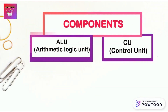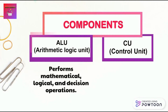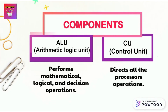In the CPU, there are two primary components. Firstly, the ALU — arithmetic logic unit — and secondly, the CU — control unit. The arithmetic logic unit performs mathematical, logical and decision operations, while the control unit directs all the processor's operations. The control unit extracts instructions from memory, decodes and executes them, acts as an intermediary that decodes instructions sent to the processor, tells other units such as the ALU what to do by providing control signals, and then sends the processed data back to memory.